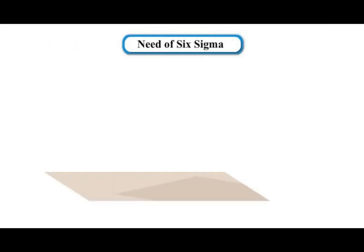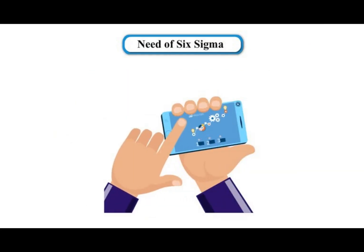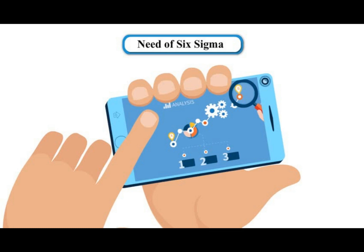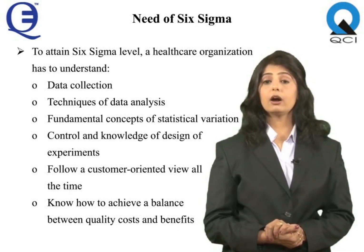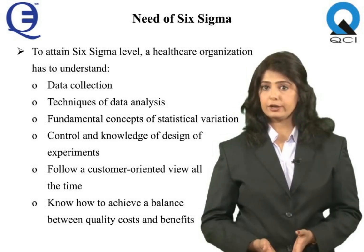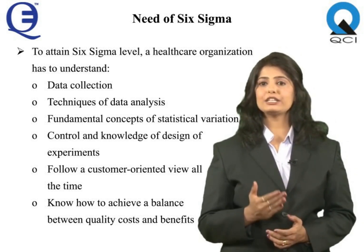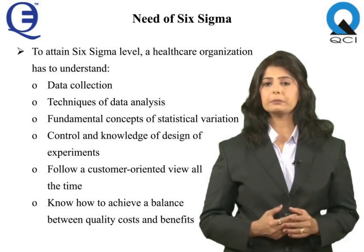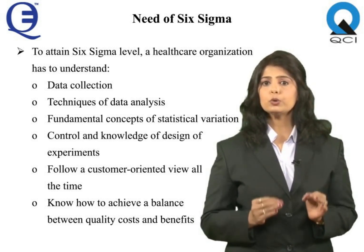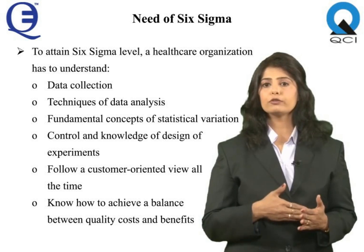Need of Six Sigma: Six Sigma helps to identify and eliminate defects in a process and focuses on outputs that are critical to customers. To attain Six Sigma level, a healthcare organization has to understand data collection, techniques of data analysis, fundamental concepts of statistical variation and control, and knowledge of design of experiments. It also has to follow a customer-oriented view at all times, and must know how to achieve a balance between quality, cost, and benefits arising from quality initiatives.